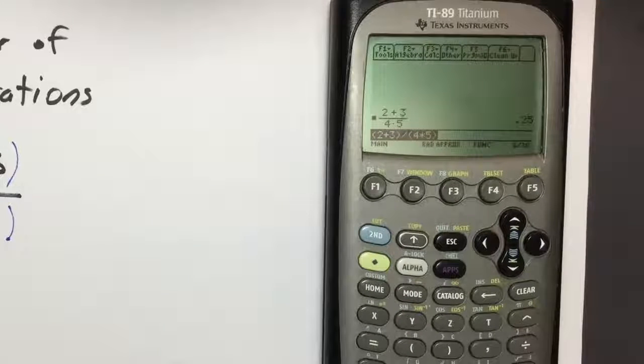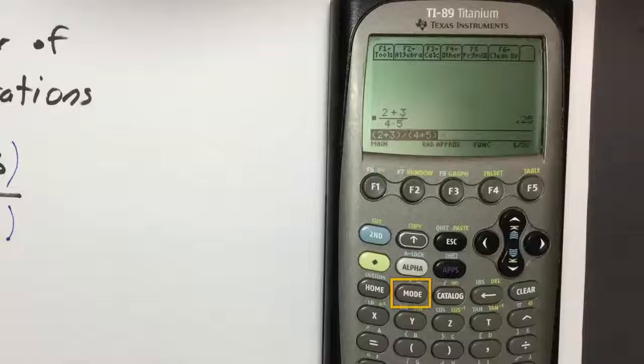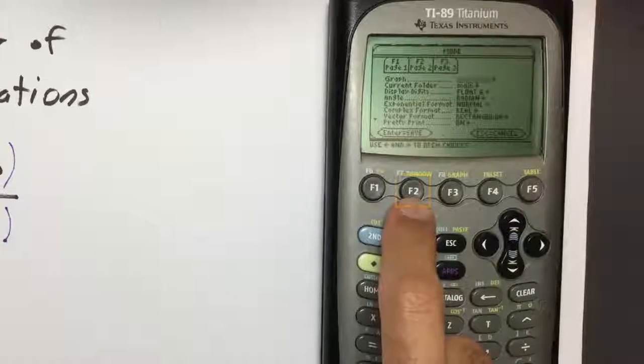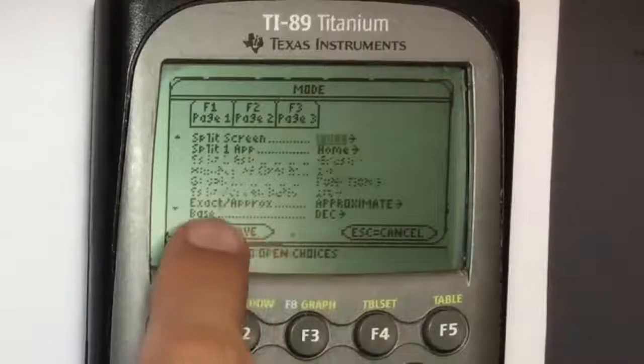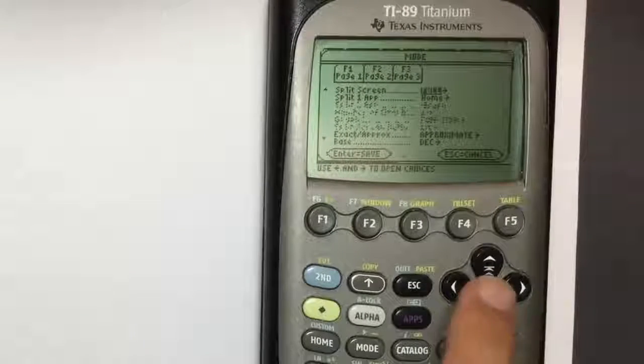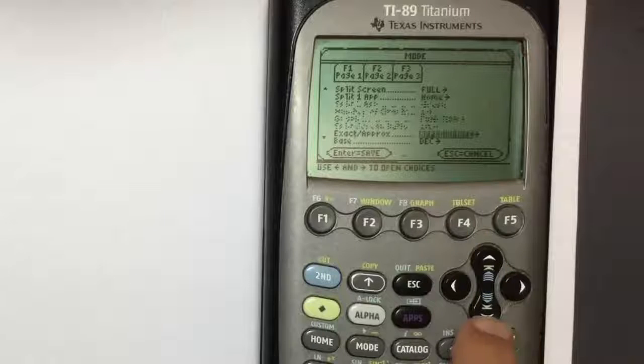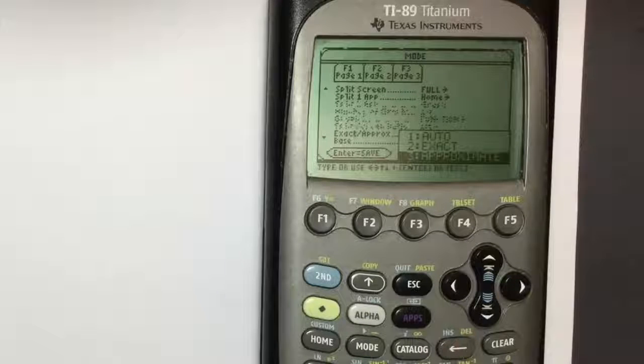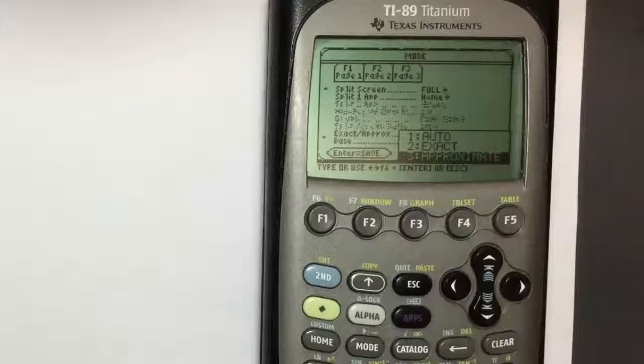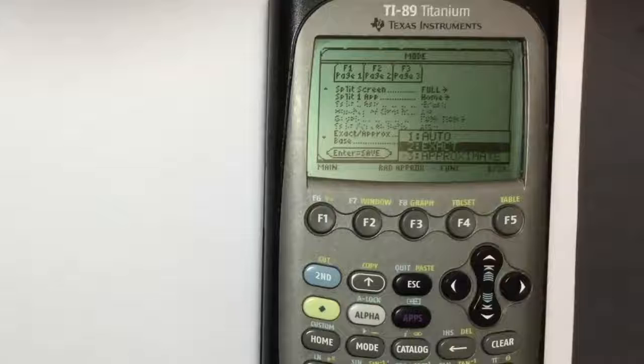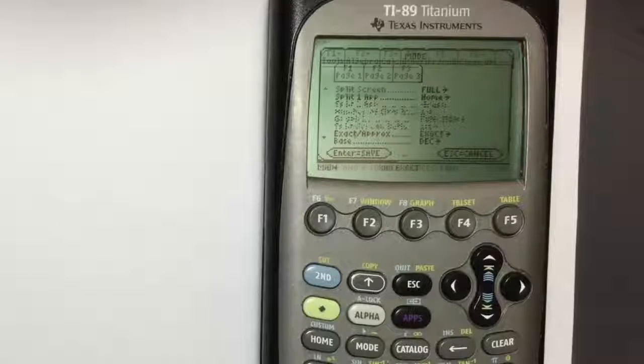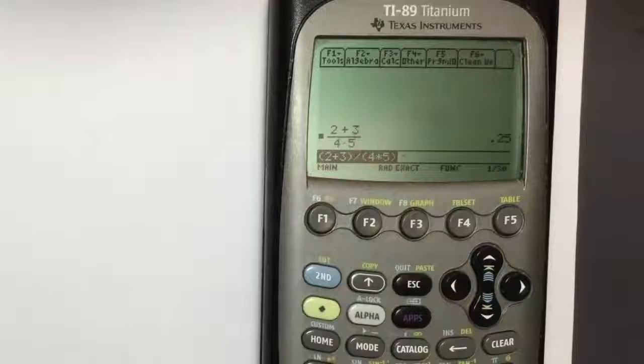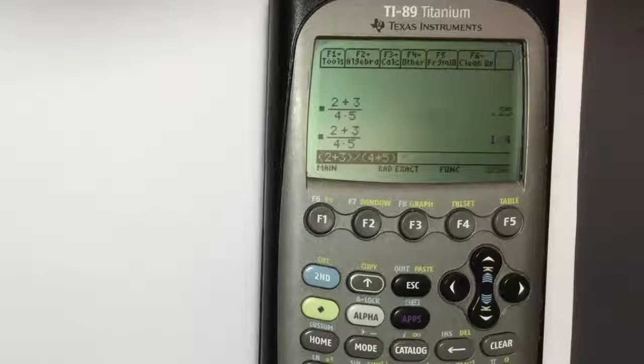If you'd like the answer to be represented as a fraction, that's going to take a little bit of work. First, we press the mode key in between home and catalog. The option we're looking for is on page 2, so we press the F2 key now. And there's an option, second from the bottom, saying exact slash approximate. We press down on this little arrow until we have our option saying approximate highlighted. Then press the right arrow to open the menu. Now you see that it lists auto, exact, and approximate. We press the up arrow to highlight exact. Press enter, and then press enter a second time. You see the problem that we worked is still in the bottom bar right here, meaning now we can just press enter, and it says 1 over 4.